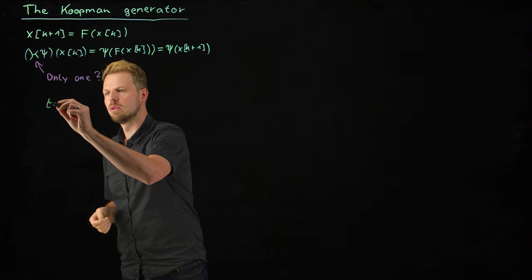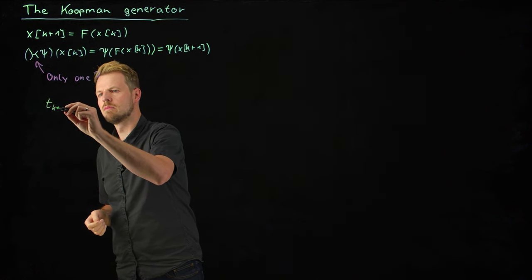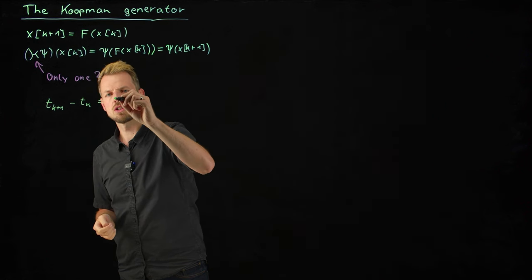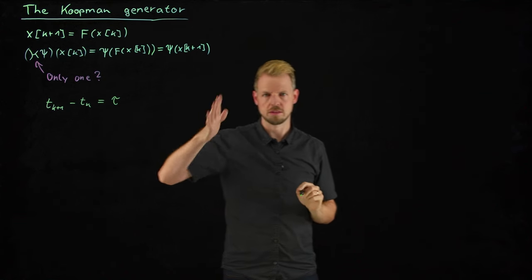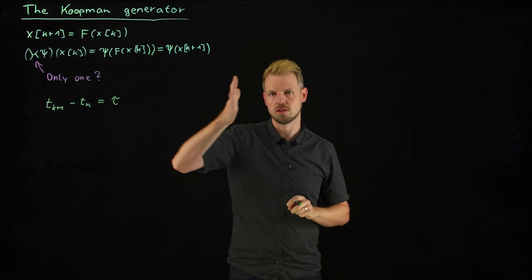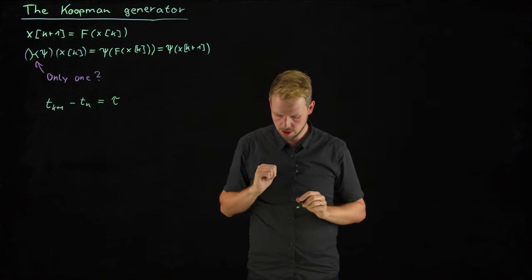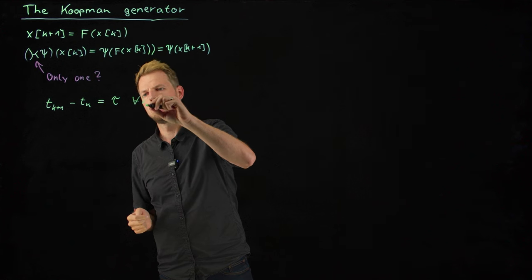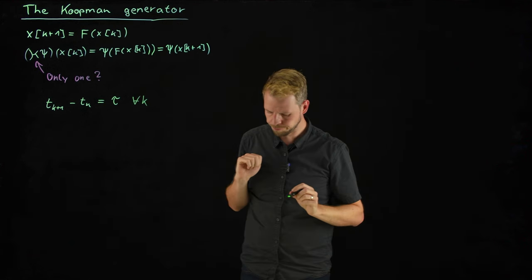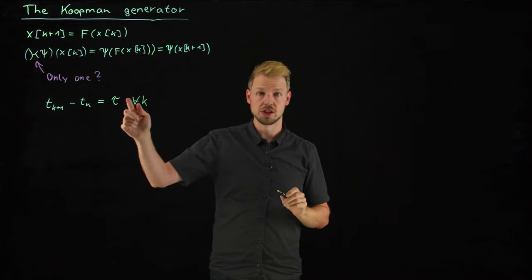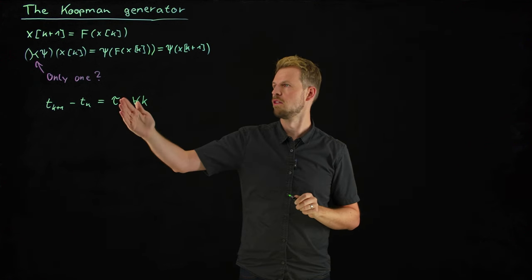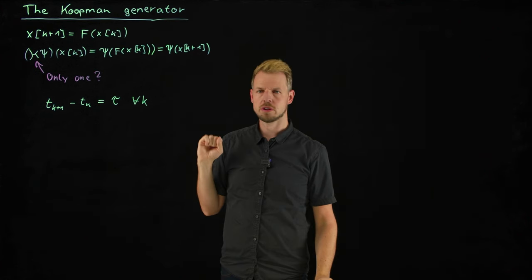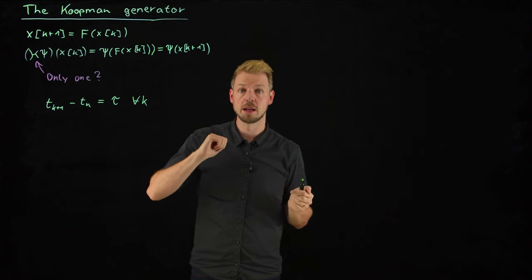If we consider the time difference between two points where we measure to be tau, usually this is constant because we have discrete time measurements that are equidistantly distributed in time. Then we have that k tau is the time step for all k, so it's a constant time step. However, if we change the time step, so we measure every second step only or twice as many samples, then we would get a different Koopman operator associated with a different time scale.